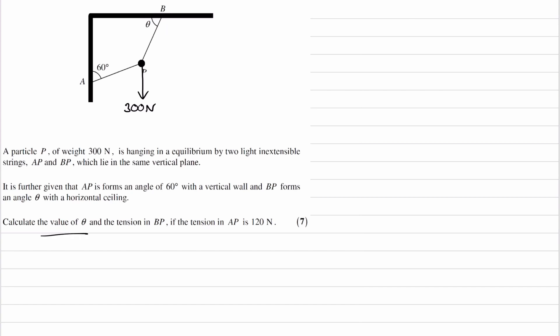We want to work out theta and the tension in BP, so let's draw that tension, that's T. We're trying to work out what that is. If the tension in AP is 120, both of these strings will pull particle P, so the tension here will be 120 and pointing towards A.